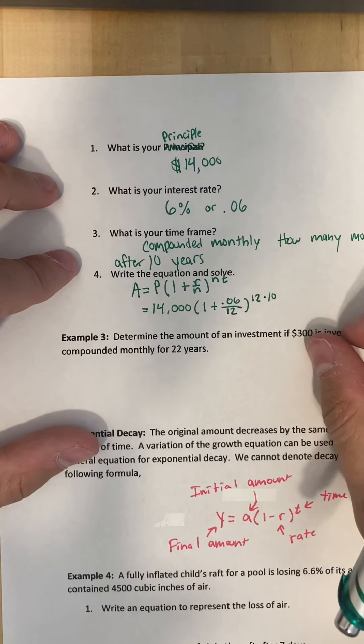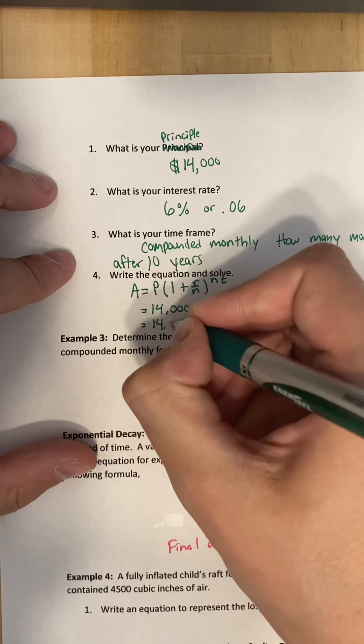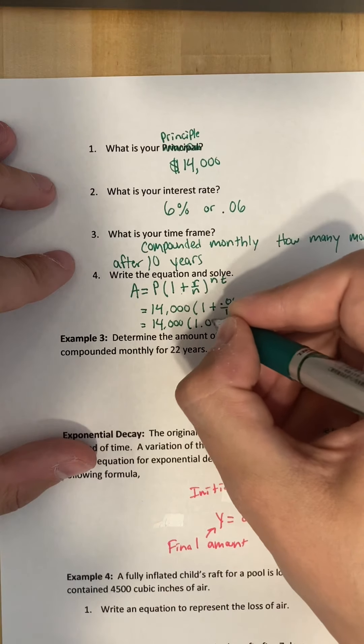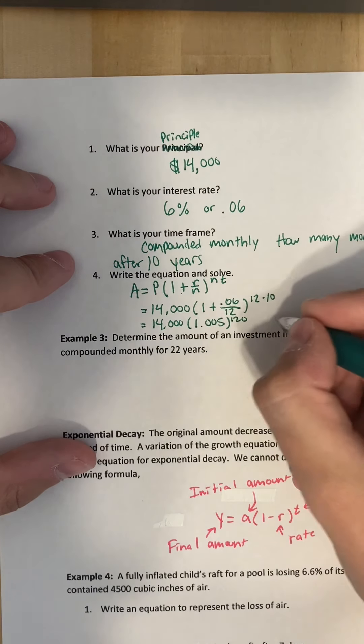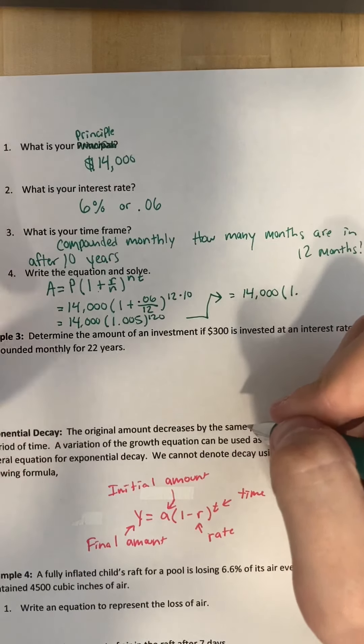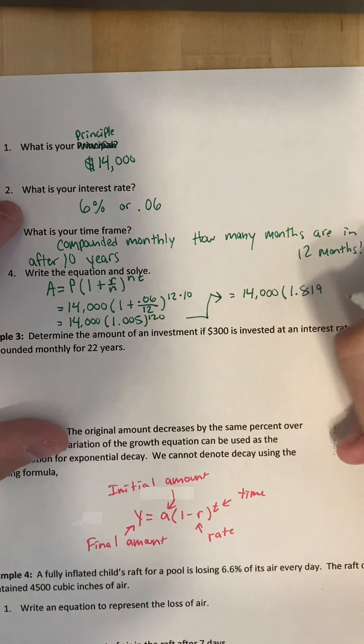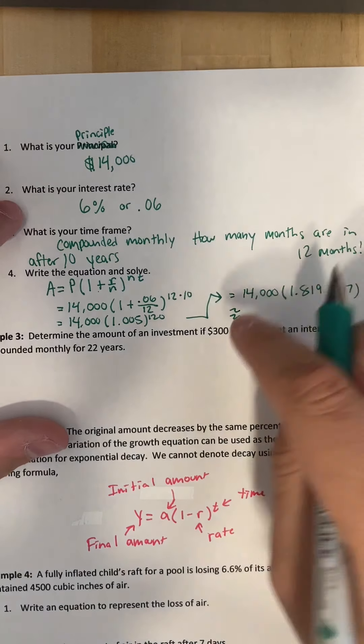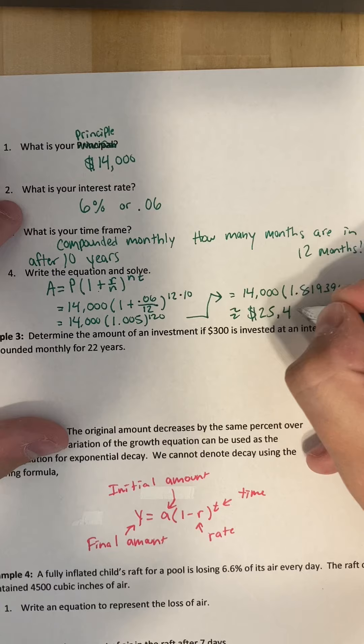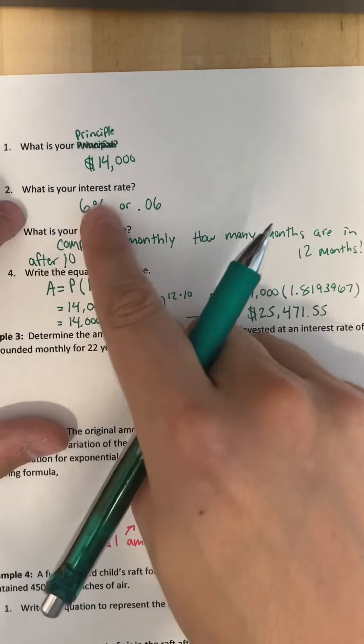And that was the hardest part. Now you just got to plug it into a calculator. So 14,000, this would be one, I think I got 1.005, and then this is to the 120th power. So then this would be 14,000 times 1.81939667. And you get something around, this just means around or approximate, you get something around $25,471.55. Yeah, if you can get a 6% interest rate that's really good. So in 10 years you made $11,000 doing nothing.